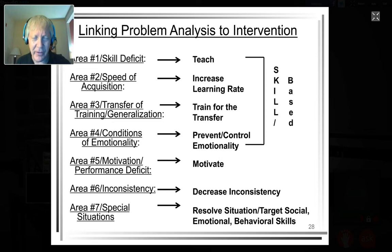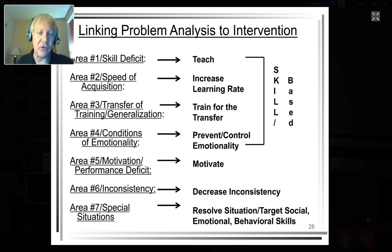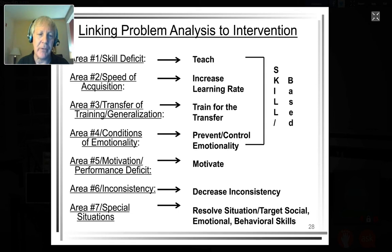Here's the connection as a summary. The first four high-hit areas are largely skill-based: you're teaching a social skill, helping the student learn it more quickly, teaching them to use it in the real world, and teaching them to use it under emotional conditions. High-hit five is the student who can do it but chooses not to — that's a performance-deficit student. Then you've got inconsistency and special situations. The kids who are problematic in the first four areas are skill-deficit kids; high-hit five is a performance-deficit student.